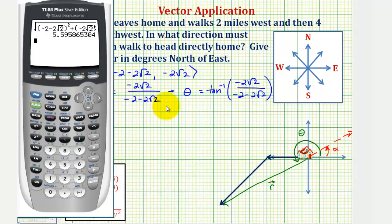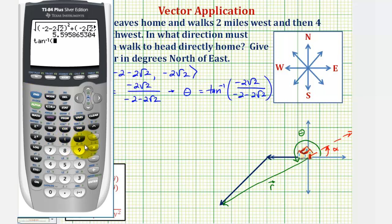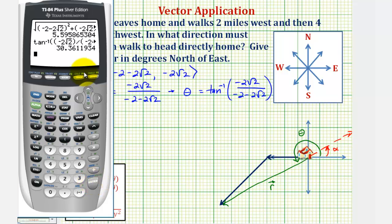We want to make sure we are in degree mode, so we press the mode key, go to the third row, highlight degree, and press enter. Back on the home screen, we press second tangent, enter the numerator negative two square root two in parentheses, divide by the quantity negative two minus two square root two, and press enter. The angle is in the first quadrant, so it is the angle we're looking for. The direction of the resultant vector is this angle plus 180 degrees. So our angle is approximately 30.3612 degrees north of east.